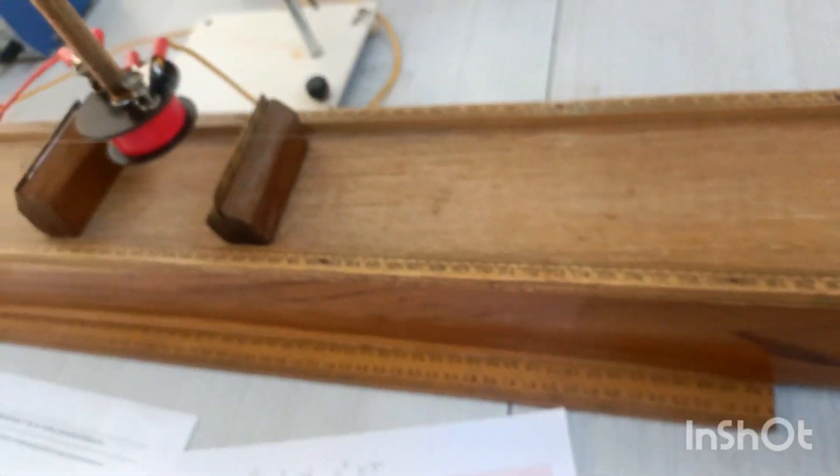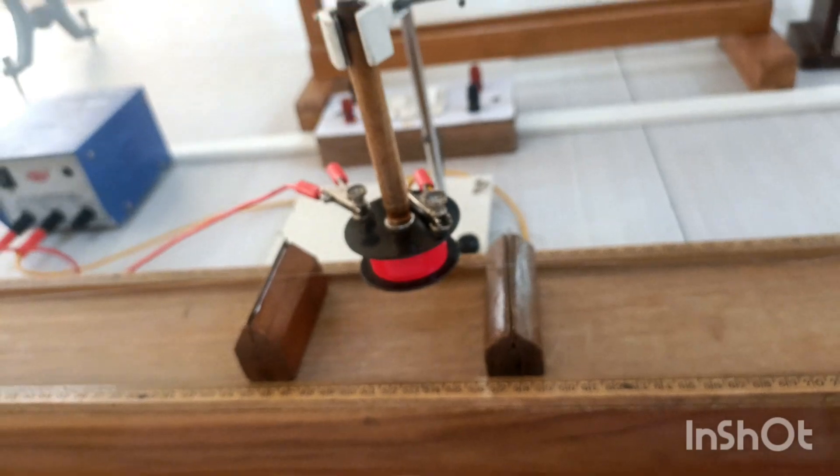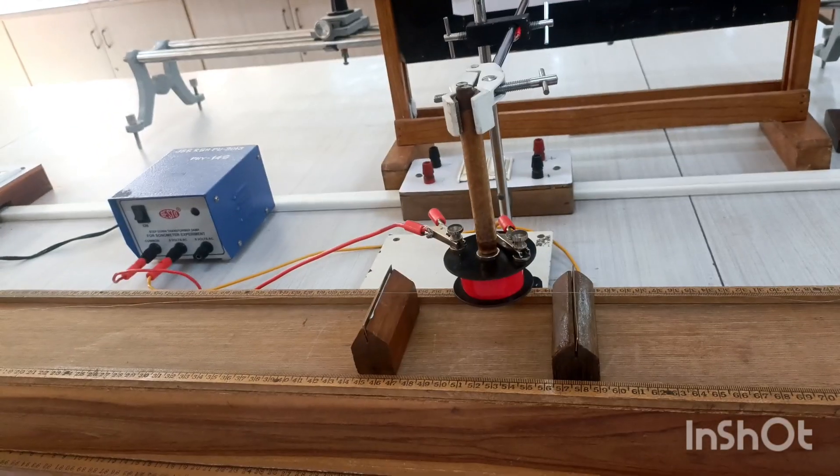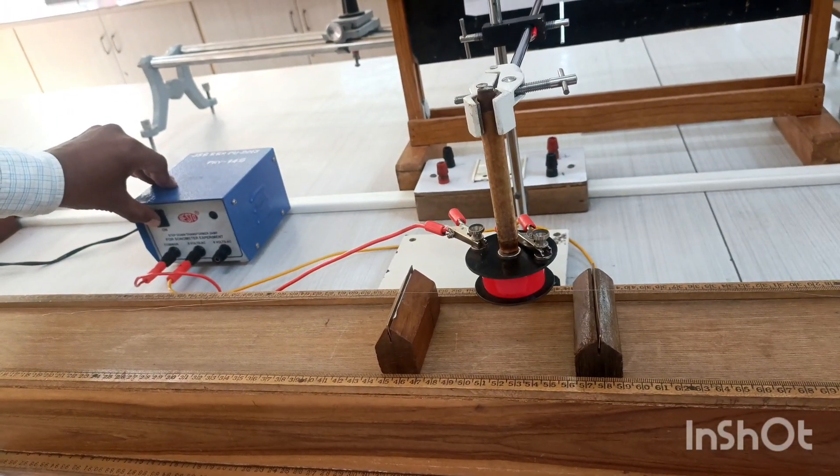Now let us apply alternating current across the wire. Switch on the AC mains and then the step-down transformer.